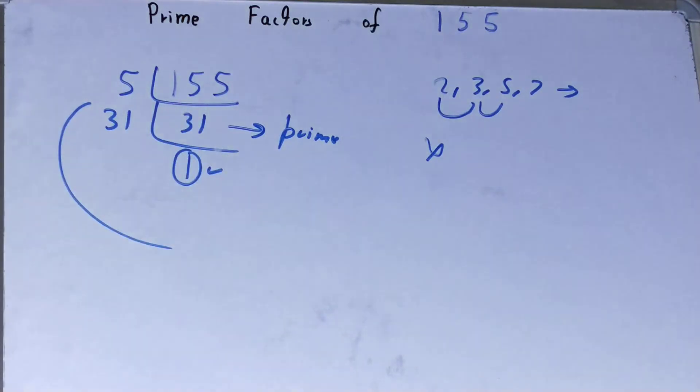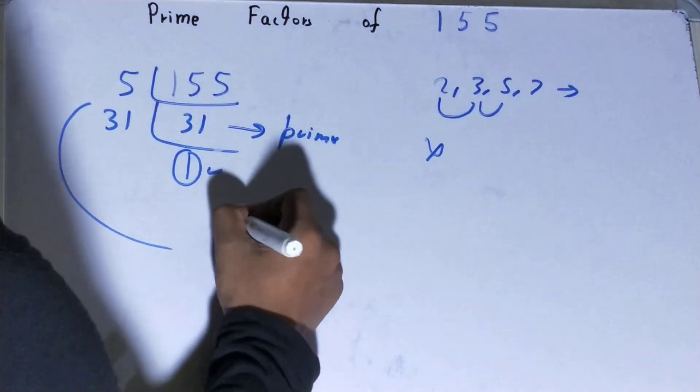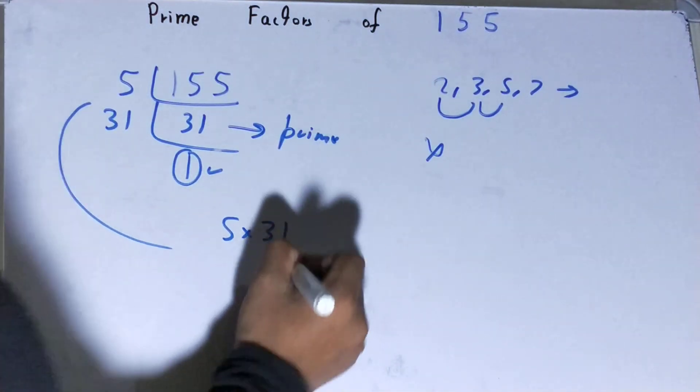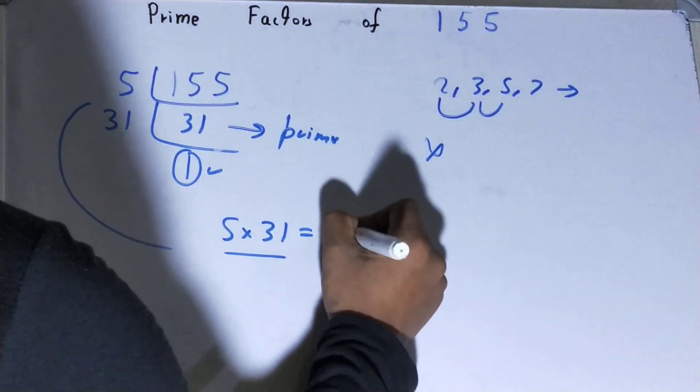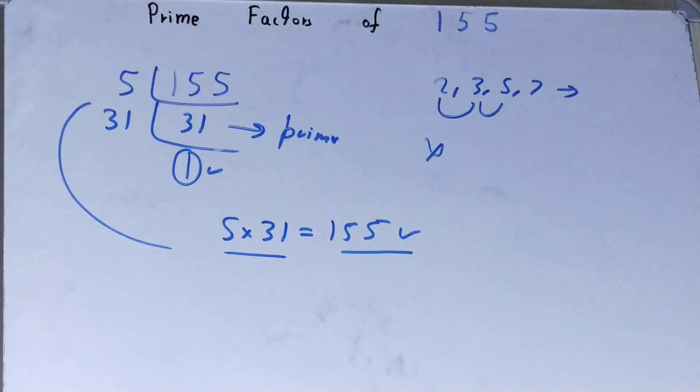And whatever you have on the left-hand side will be the set of prime factors for the number 155, that is 5 × 31. If you want to check whether it is right or not, you can multiply them, and if on multiplying you have the number back again, that means your calculation is correct. If not, you need to recheck.